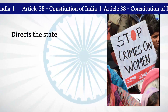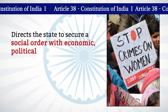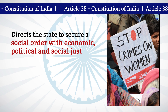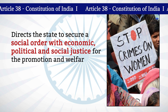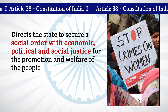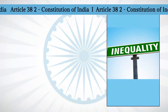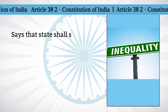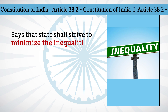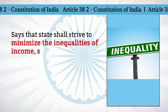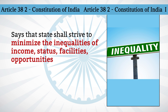Article 38 directs the state to secure a social order with economic, political, and social justice for the promotion and welfare of the people. Article 38 also says that the state shall strive to minimize the inequalities of income, status, facilities, opportunities, etc.